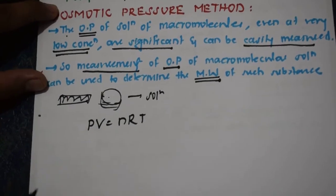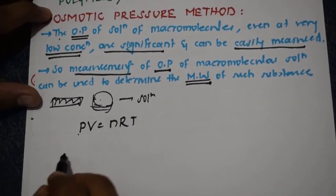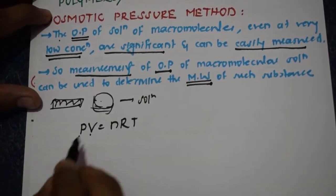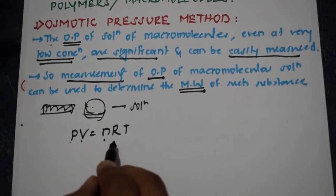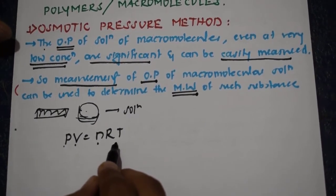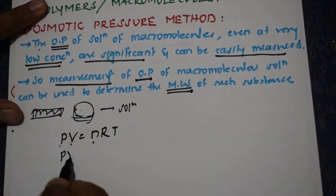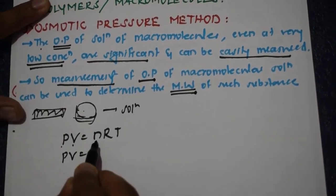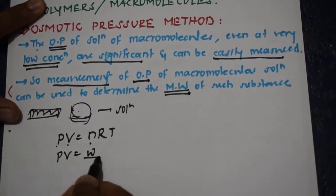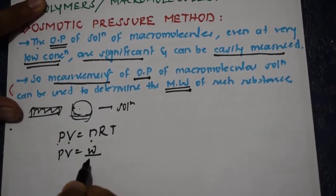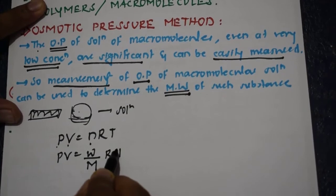We know this equation PV is equal to nRT, where P is the pressure, V is the volume, n is the number of moles, R is the gas constant, and T is the temperature. PV equals n, and the number of moles can be written as given weight divided by molecular weight, into R into T.